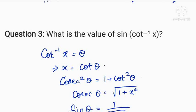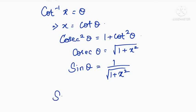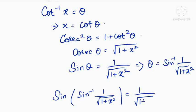Therefore, sin theta equals 1 over root of 1 plus x squared. Substituting back, sin of cot inverse of x equals 1 over root of 1 plus x squared, which is (1 + x²) to the power of minus one half. This is the value of the given function.